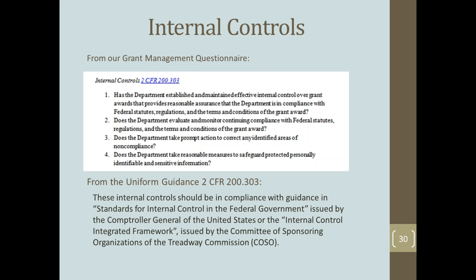Internal controls around such things as tone at the top, professional development and training of staff, standardization of subaward agreements, and random internal audits of subaward agreements are a few items that could help your entity meet the challenge of ensuring required information is communicated to subrecipients. Internal controls should provide reasonable assurance that the required information will be communicated to subrecipients on the subaward.